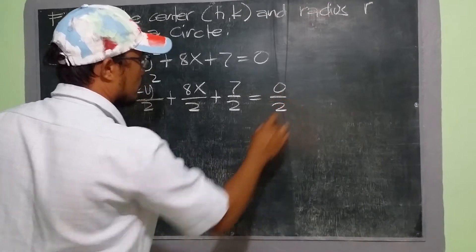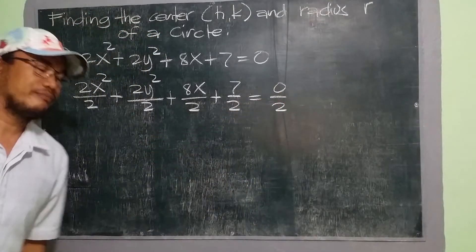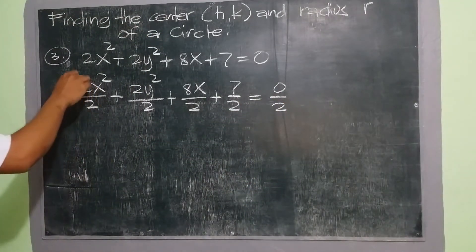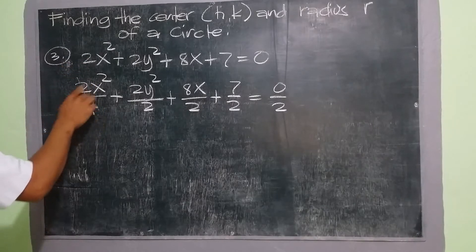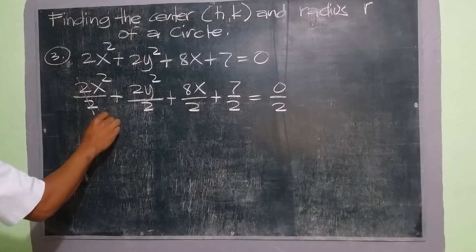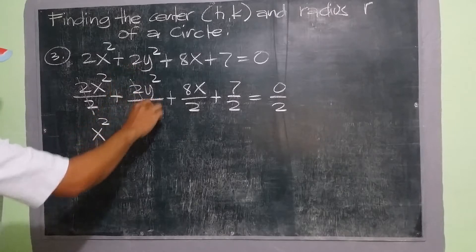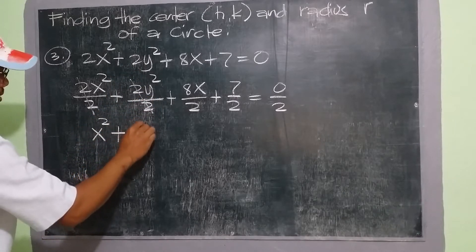We divide that 2, we also divide 0 by 2. Now we can cancel 2, since 2 divided by 2 is 1 times x squared, we still have x squared. We cancel 2, what remains is y squared.